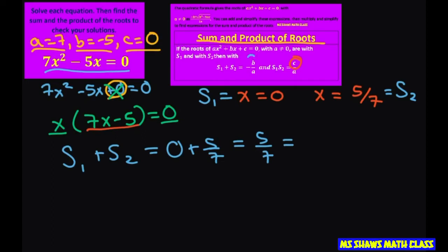Now that's supposed to equal negative B over A. So that tells me my A is 7. So that works out. My negative B is 5. That means my B is negative 5. So that works out.